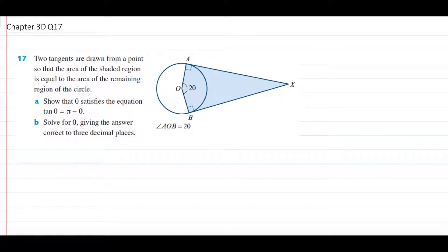Hey everyone, welcome to Hoxtrotting. I hope you're having a great day. Today we are doing question 17 from chapter 3D, your circular function chapter. This question is quite difficult, especially part A, but that's why I've made a tutorial video for it — to help you guys do this question and move on to do other questions, and hopefully finish starting practice exams as early as possible. Let's get into the question.